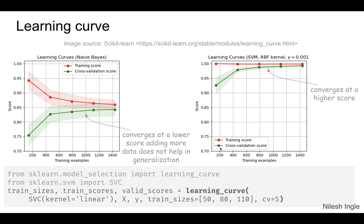On the right hand side we have a case where, as we increase the number of training examples, the training score does not drop as much as we saw on the left. Meanwhile, the validation score continues to increase.